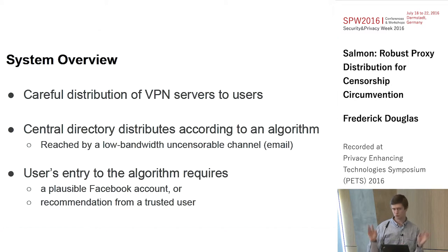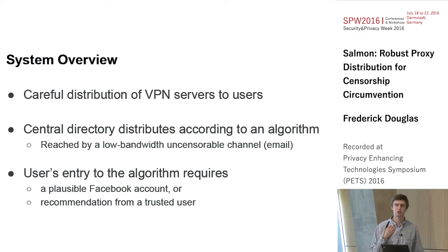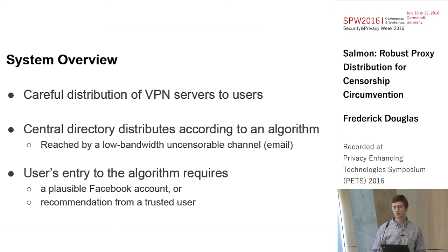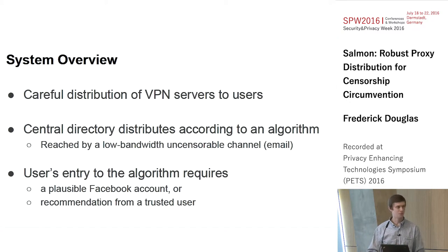For the Facebook account checking, what we're doing right now is we just require the account to have been created before a certain date, so the censor can't just come along and make a bunch of Facebook accounts, and also to have some posts on it. That's a pretty simple approach. You could imagine much more sophisticated things, like some sort of machine learning to say, does this look like a good page or not? Those are things that could be added to basically strengthen the system.